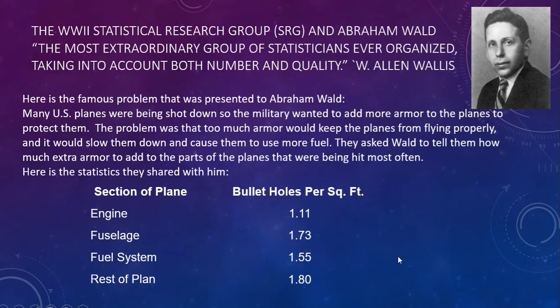In World War II, there was a group called the Statistical Research Group, or the SRG. Abraham Wald was part of that group. Another man in that group was Alan Wallace, and he said of that group, 'the most extraordinary group of statisticians ever organized, taking into account both number and quality.'